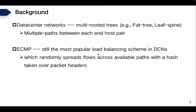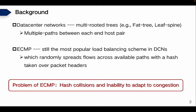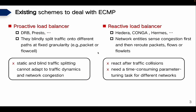However, ECMP balances traffic poorly because of hash collision and the inability to adapt to congestion. Over the last decade, there has been a line of work on designing load balancing schemes to address the problems of ECMP. One is proactive load balancers, which blindly spread traffic on different paths at fixed granularity. Because of their proactive nature and stateless behavior, they are simple and easy to deploy. However, blind traffic splitting cannot adapt to traffic dynamics and network congestion, resulting in bad load balancing performance.